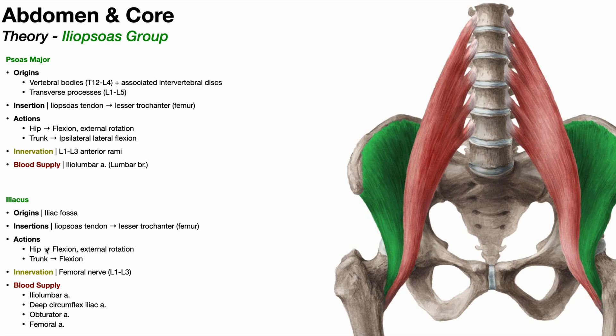Iliacus has actions at both the hip and the trunk. Like psoas major, it facilitates hip flexion — it's a prime mover of hip flexion — and weakly assists with hip external rotation. Contracting bilaterally, it will also be a very weak trunk flexor. The major trunk flexor is the rectus abdominis muscle.